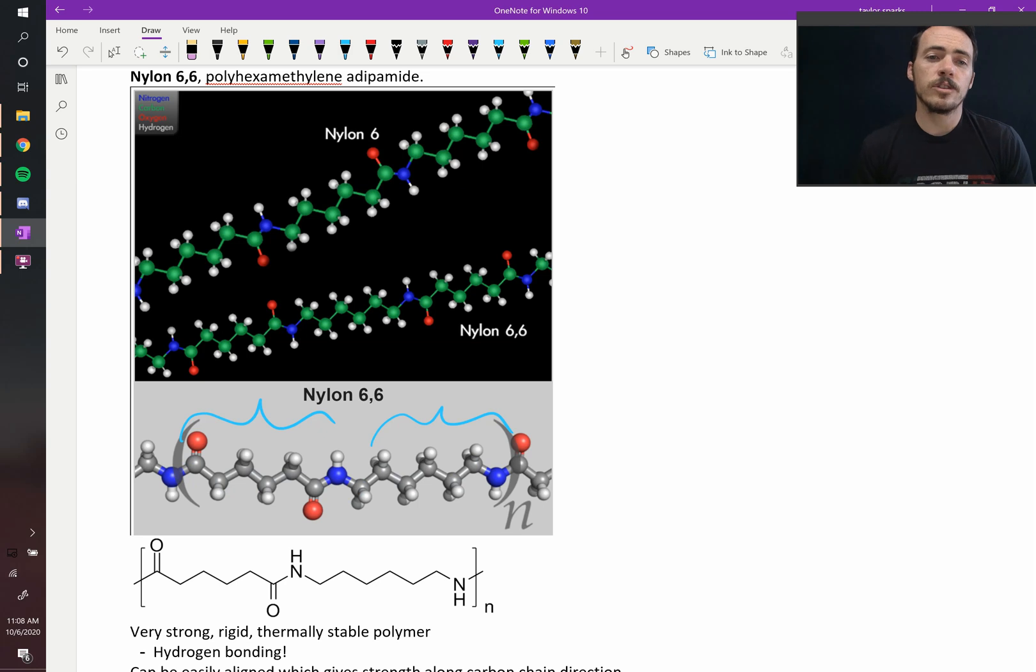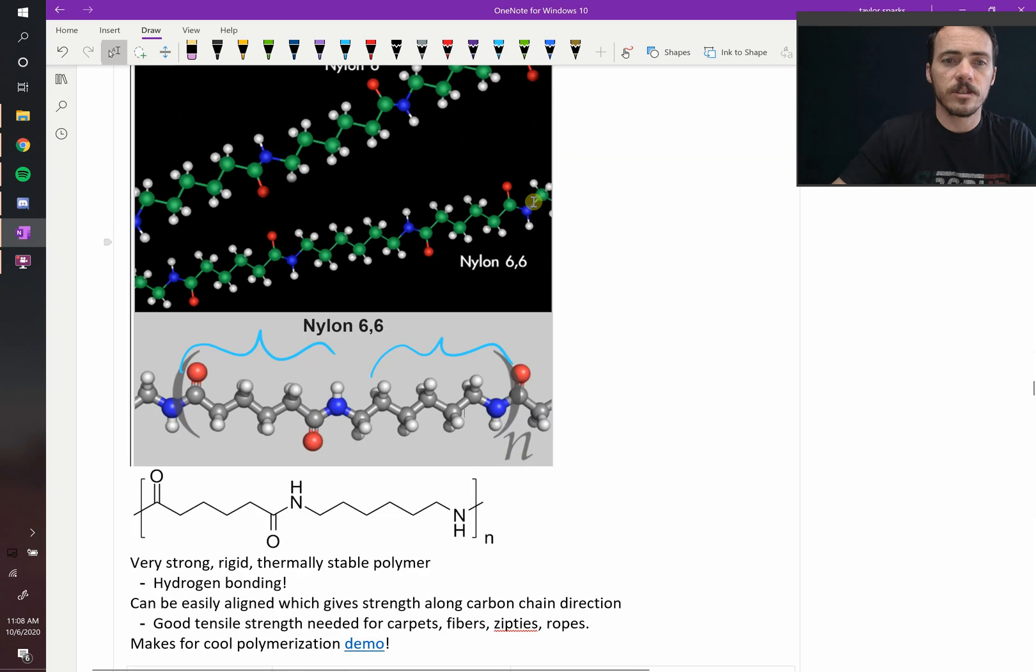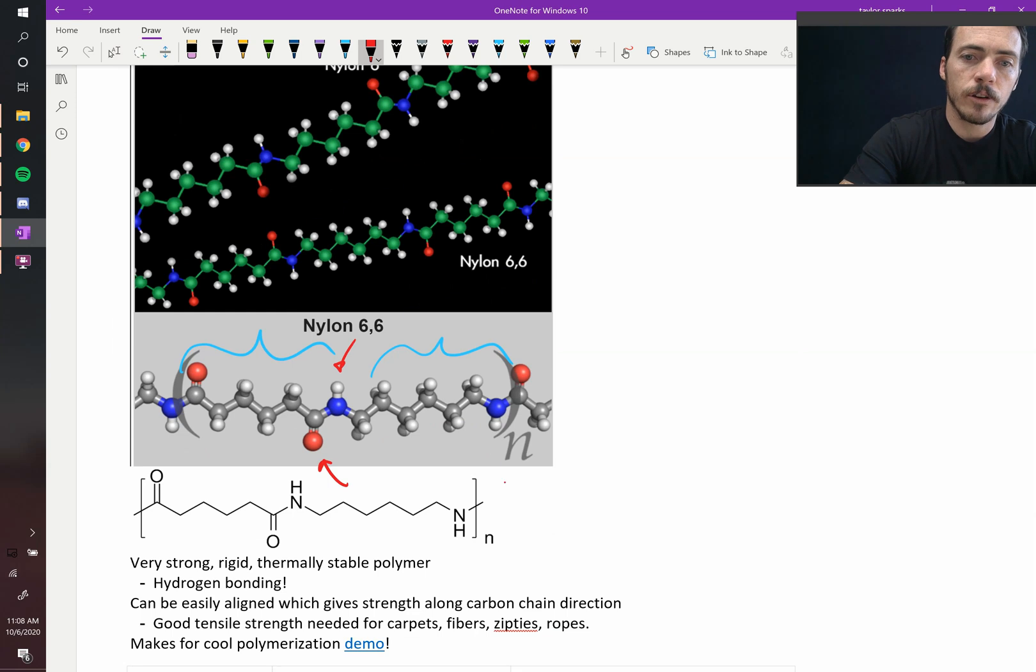And what's interesting about the structure is that you get these double bonds to oxygens coming off the side. So right here you see this. This is an oxygen hanging off to the side. And then you've got this hydrogen hanging off here and a hydrogen here and an oxygen there.